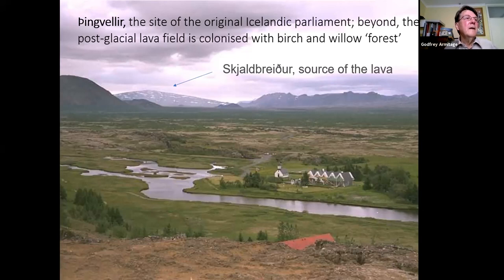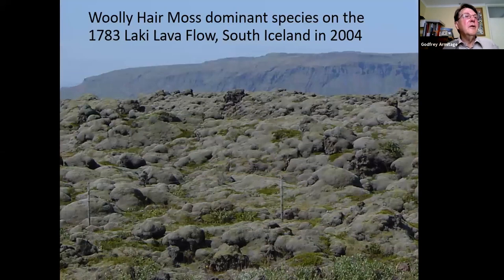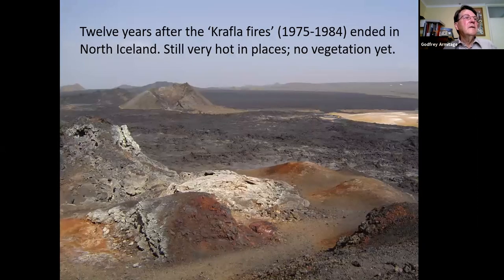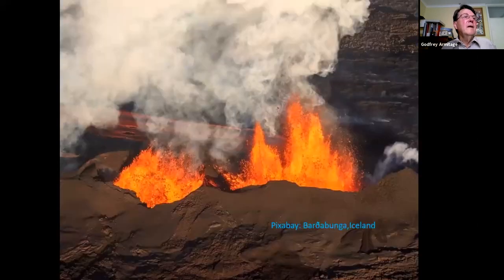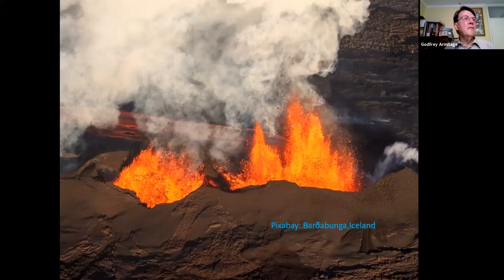Succession is the continuing replacement of species and subsequent modification of the environment with time. In Iceland this is a slow process partly because of the climate. Even after two centuries, there are few vascular plants; the community on the Laki lava flow, which is over two centuries old, is dominated by woolly hair moss with some dwarf birch and other small vascular plants. It takes many years for plants to colonise. Twelve years after the Krafla fires ended in north Iceland, it was still very hot in places with negligible colonisation, as the propagules — spores or seeds — had a long way to blow in and it was too hot to settle.